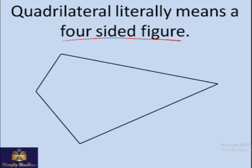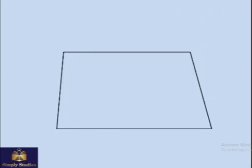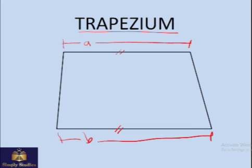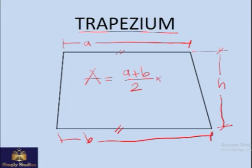Now let's try to regularize this figure. If we have a quadrilateral in which two sides are parallel to each other, then this is known as a trapezium. In case of a trapezium, if the parallel sides are each A and B units long and the height of this trapezium is H, then the area of this trapezium will be the average of the opposite sides times height.